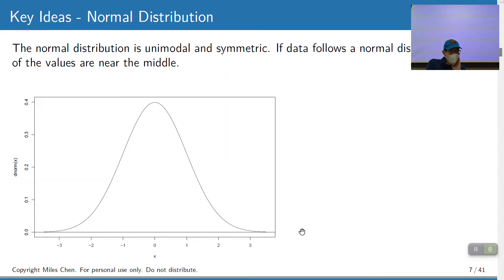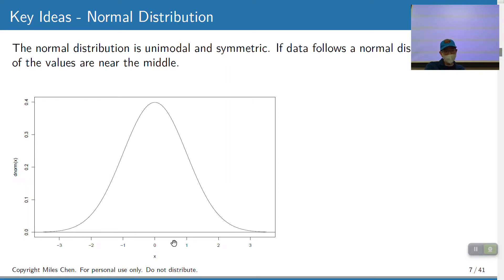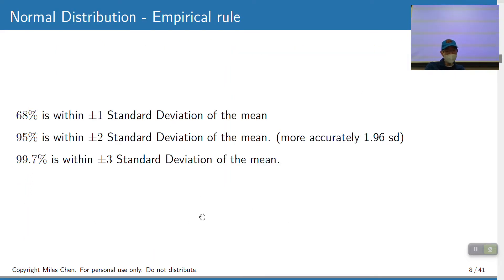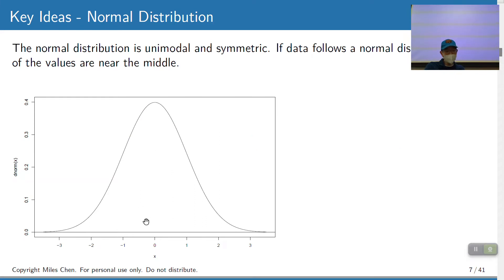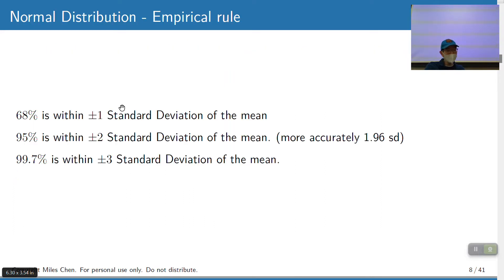We learned about the normal distribution. The normal distribution is unimodal and symmetric — values near the middle are most common, values way above or below are less common. The empirical rule says around 68% are within 1 standard deviation, 95% are within 2, and 99.7% are within 3. More accurately, we have 1.96 for the 95% mark.